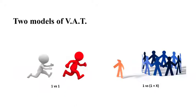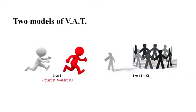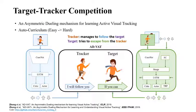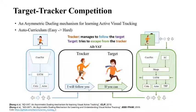First, the one-versus-one model. Introducing an adversarial mechanism into learning induces robust learners. We employ a game mechanism between the target and the tracker, called the asymmetric dueling mechanism, in which the tracker tries to follow the target while the target tries to escape.